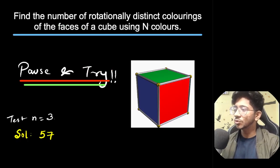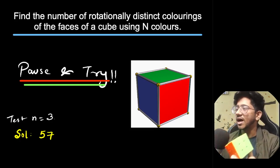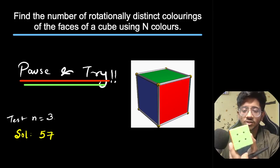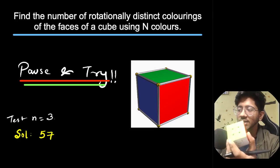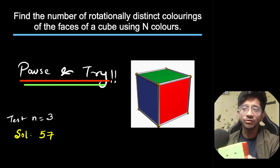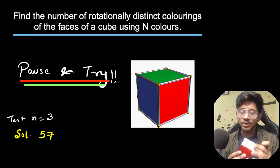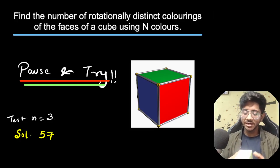So let's say you have a cube given to you with six faces — a normal cube, more like a Rubik's cube. We want to color the faces of the cube with n different colors. If you have a cube in your hand, you can rotate it in any particular direction and see how things look from different sides.